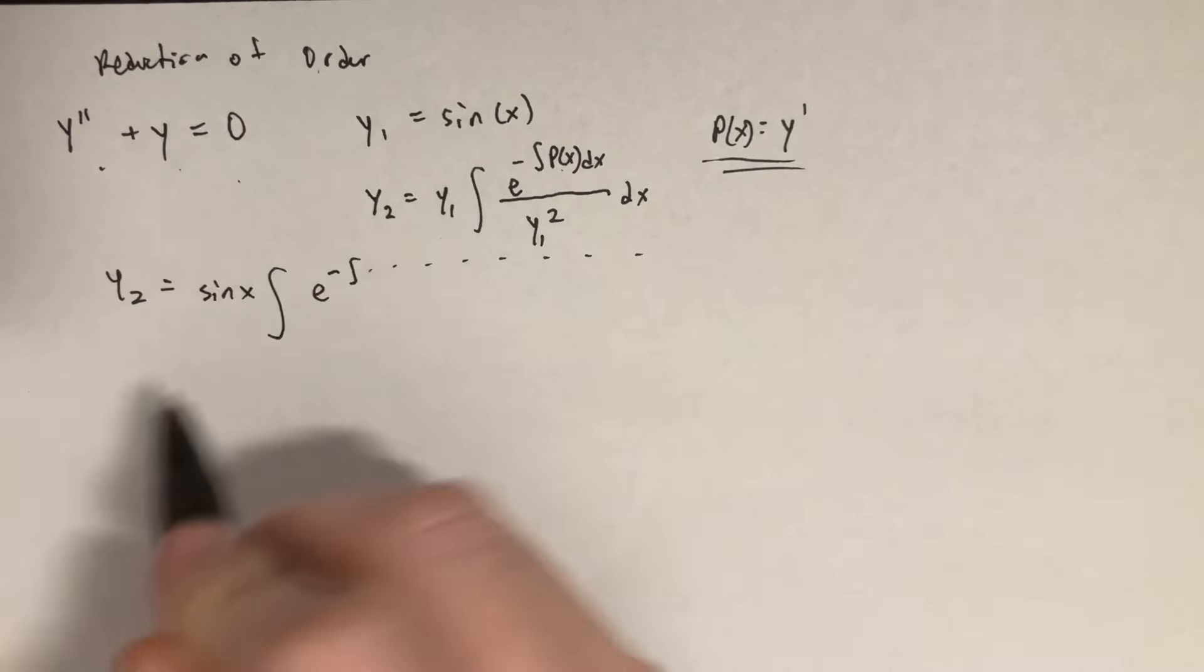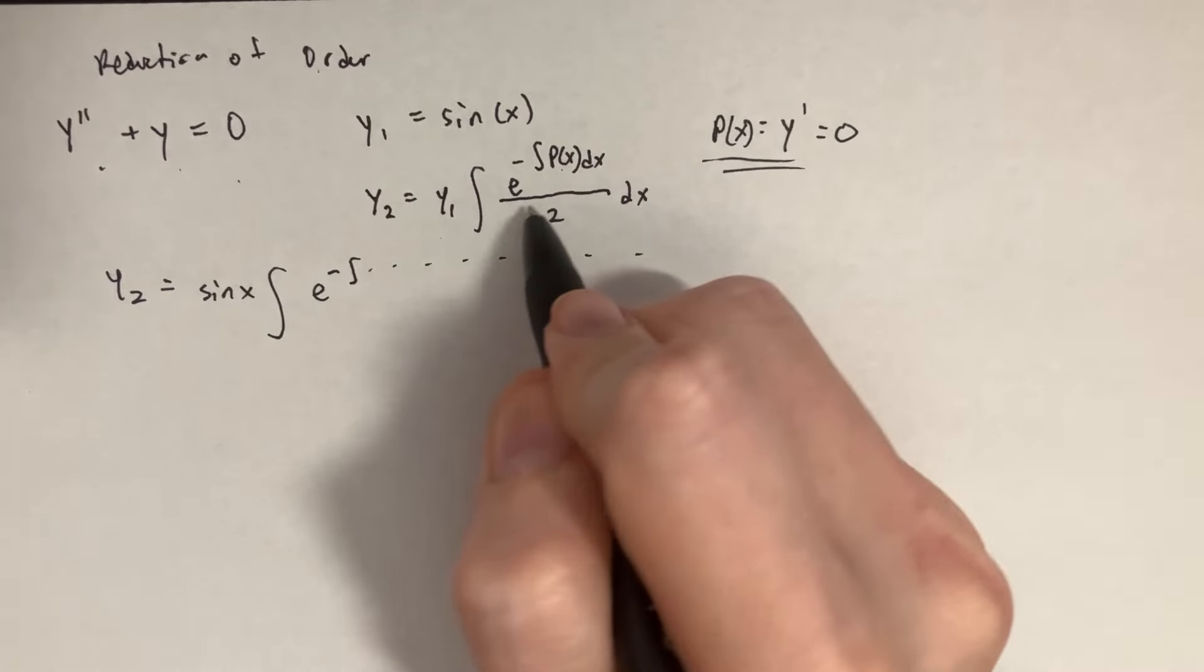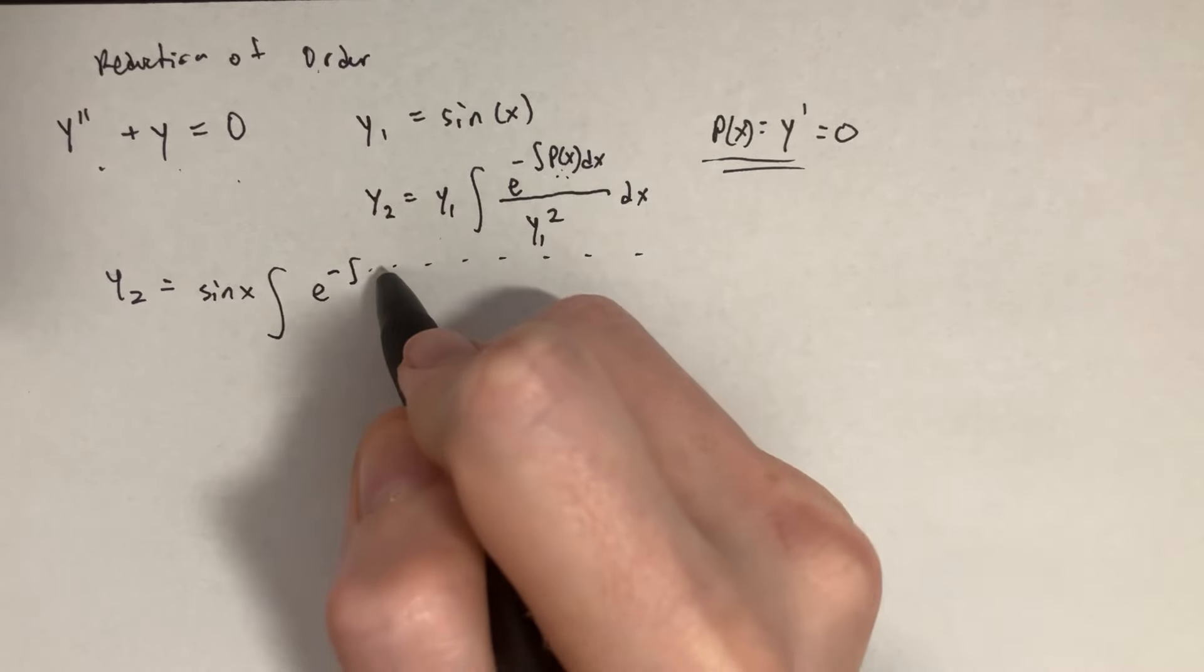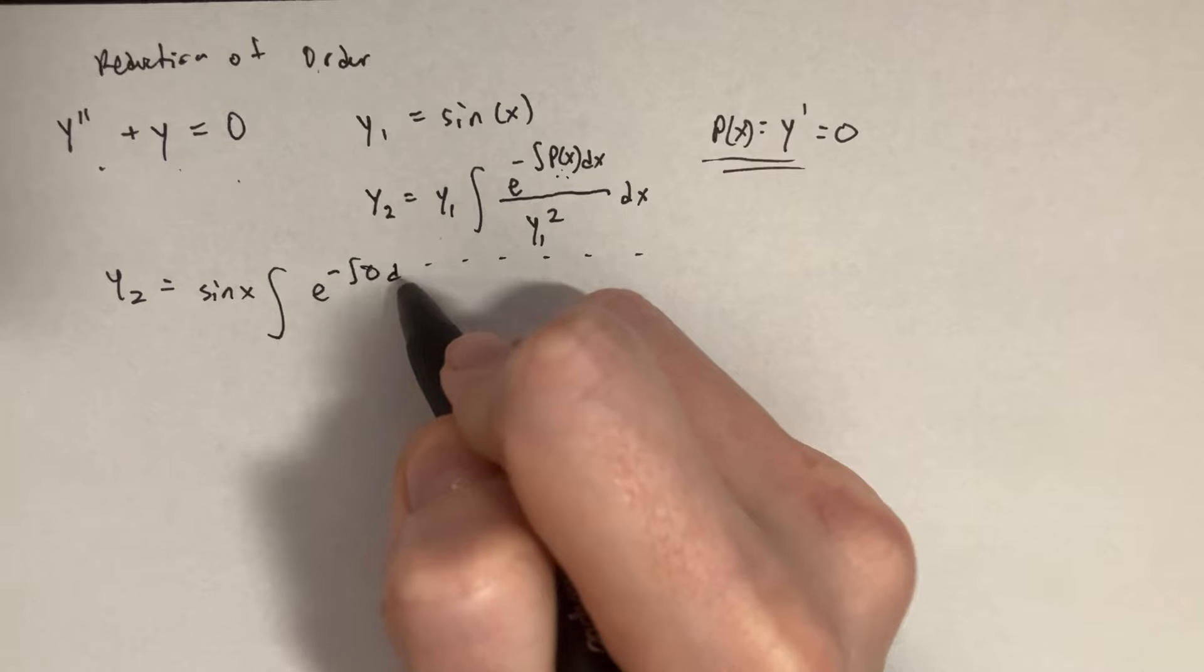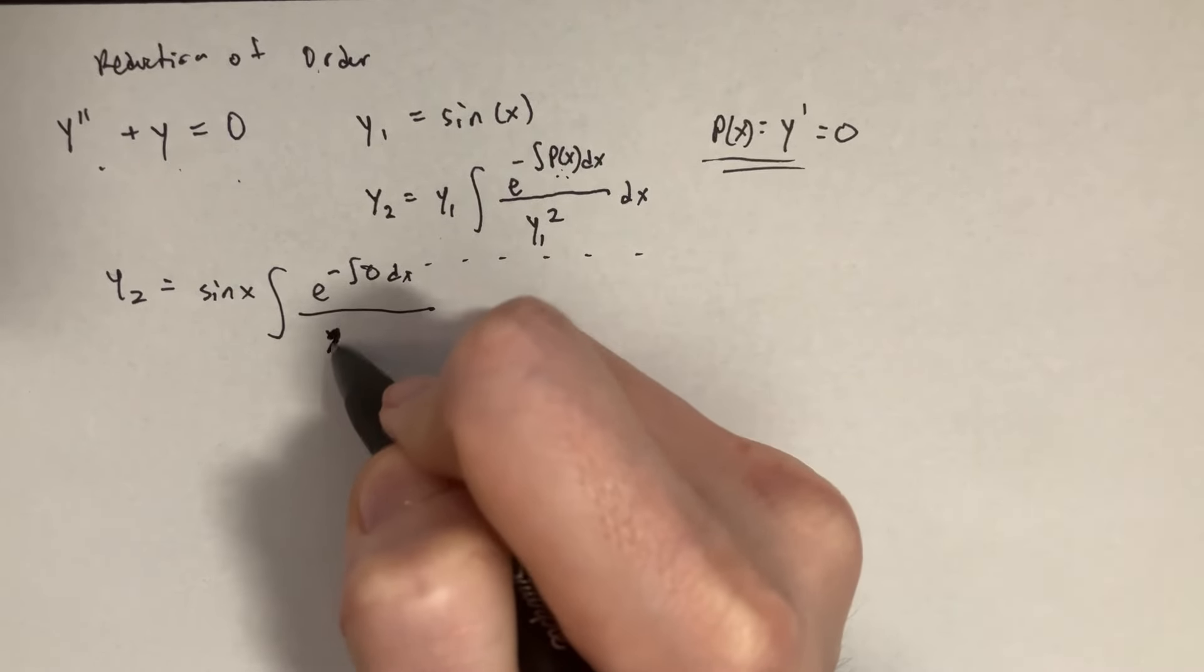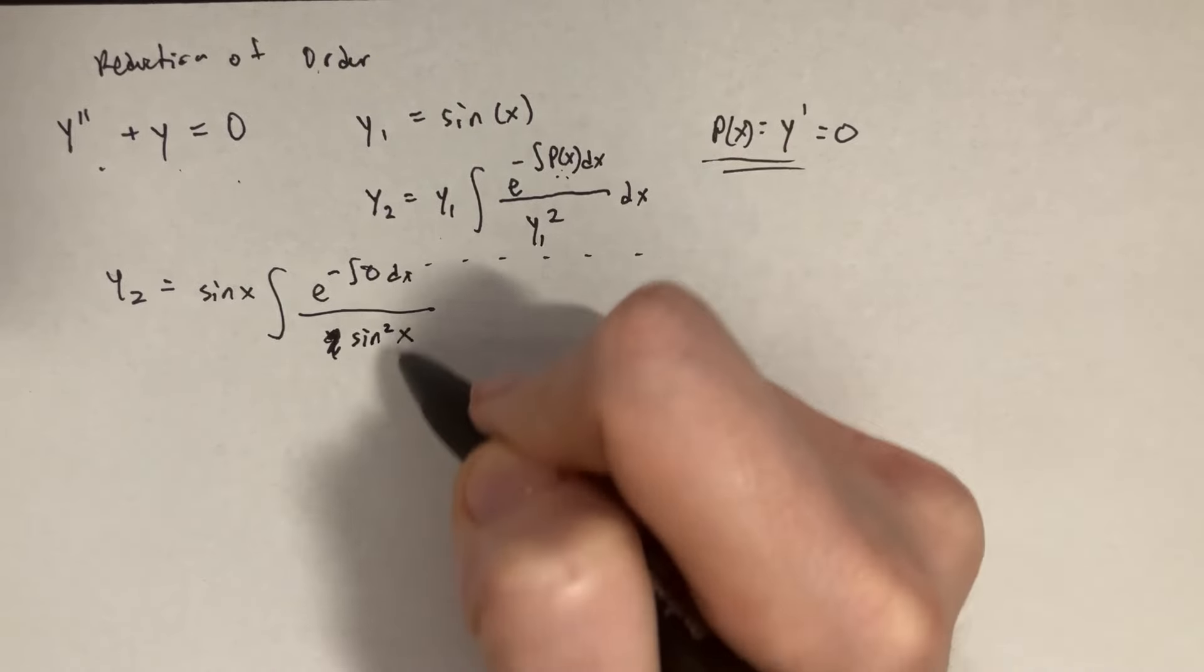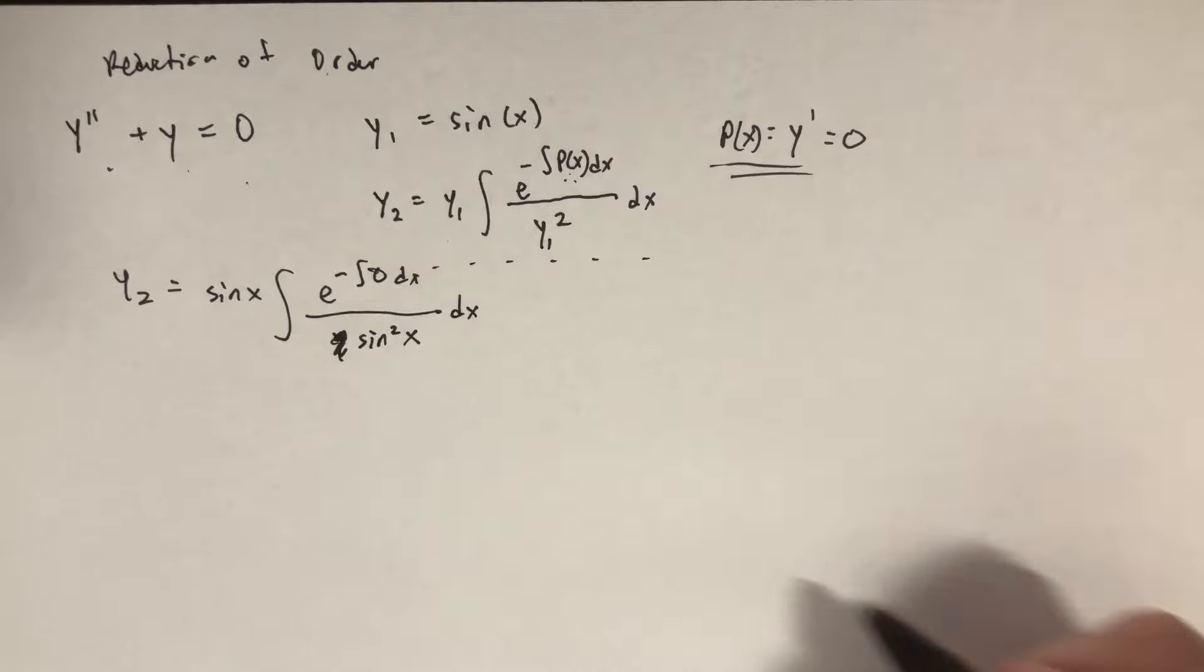But we don't have the first derivative, therefore p of x is going to be equal to 0. And that means that we're taking the integral of 0 dx and dividing that by, well y1 is just going to be sine of x, but it's sine x squared in there, and then this is going to be over dx.